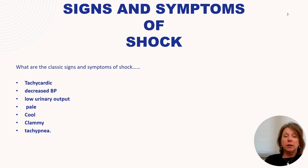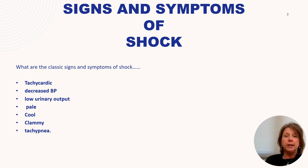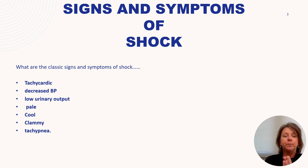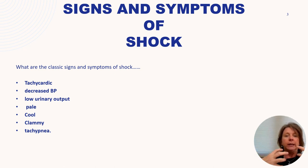General signs and symptoms of shock: we're tachycardic because the heart is trying to pump more oxygenated blood to perfuse tissues. We're hypotensive — that's a classic sign of all shocks — usually less than 80 systolic, or a drop of 40 points. Low urinary output occurs because blood is shunted to the brain and heart.